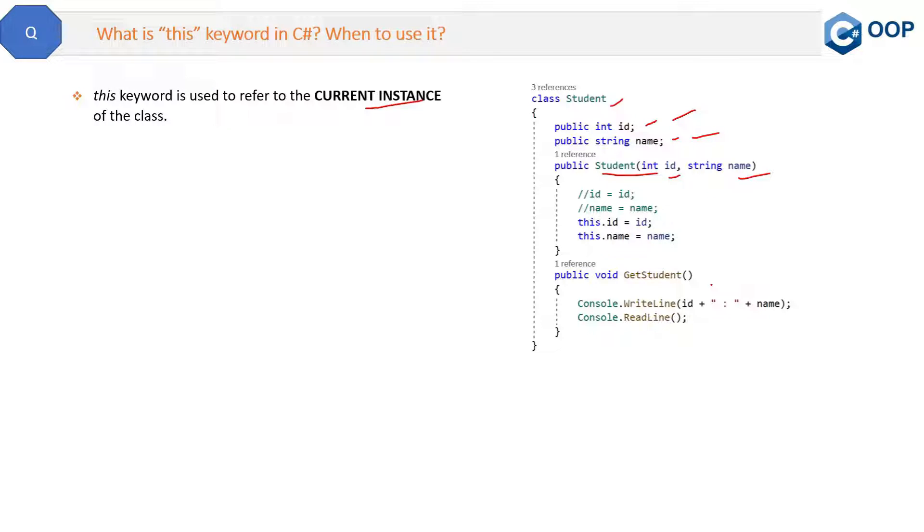The second thing is we also have a method here in this class called getStudent, which is just printing this id and name in the console window. Now we want to use this Student class.